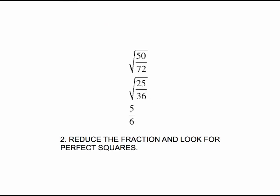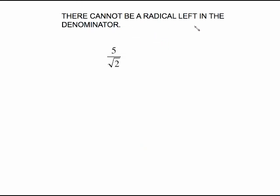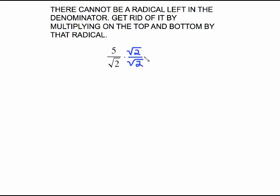There's something you need to learn before step three, and that is this rule: there cannot be a radical left in the denominator. If the problem doesn't fit either rule — no perfect square, no reducing possible, but there is a radical in the denominator — the only way to get rid of that radical is to multiply top and bottom by that radical. Multiplying top and bottom by that radical means you've only multiplied by one, since radical two over radical two is just one, so you haven't changed the value. Square root of 2 times square root of 2 is just 2 — plain old ordinary 2. That's why we multiply by the square root of 2.